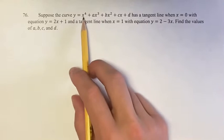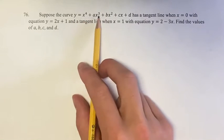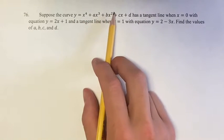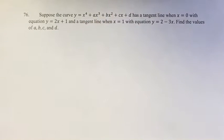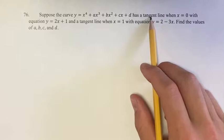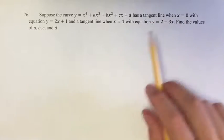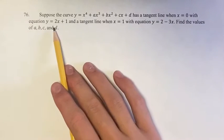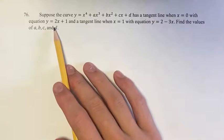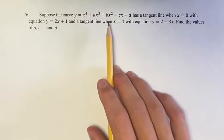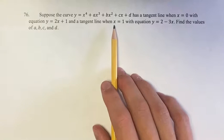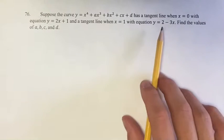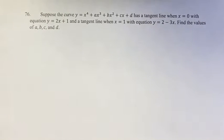we're told that this curve y equals x to the 4th plus ax cubed plus bx squared plus cx plus d has a tangent line when x equals 0 with the equation y equals 2x plus 1, and a tangent line when x equals 1 with the equation y equals 2 minus 3x.